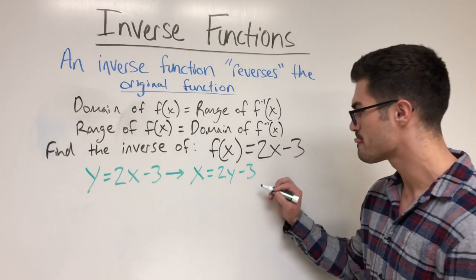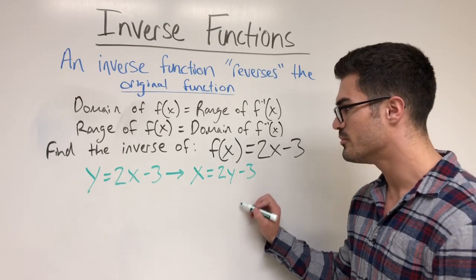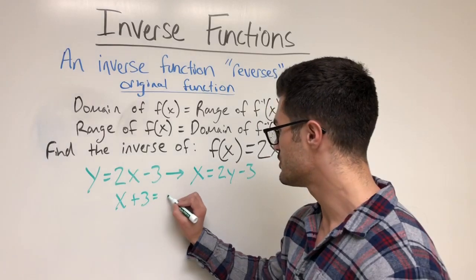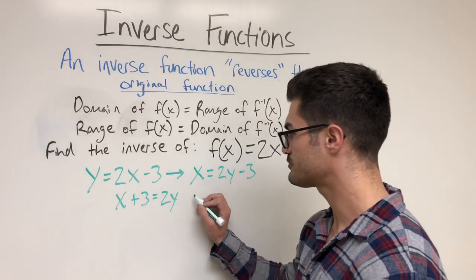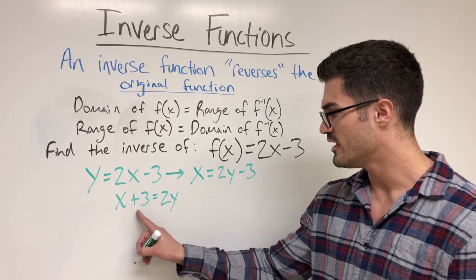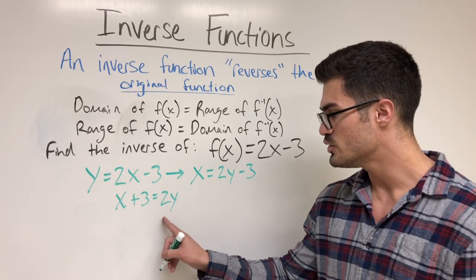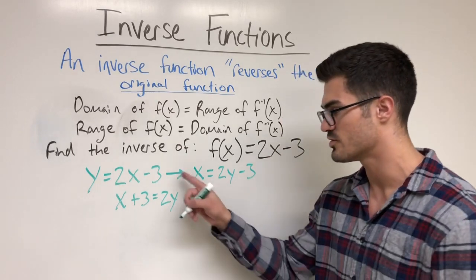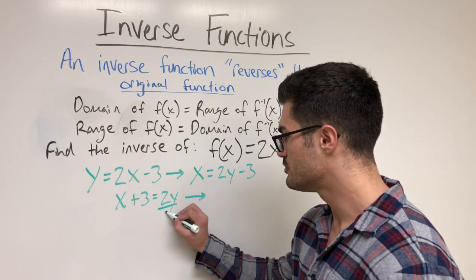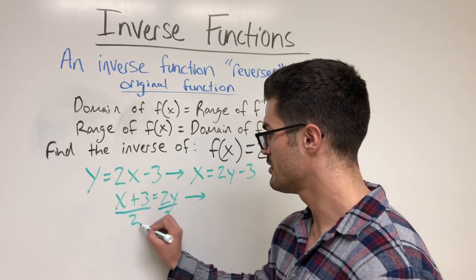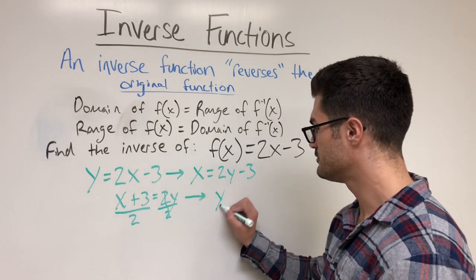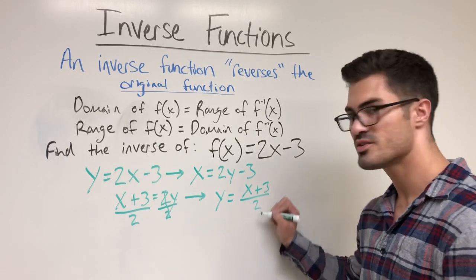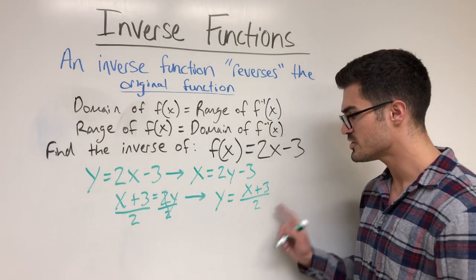I add 3 to both sides to get x plus 3 equals 2y. Then I divide both sides by 2, and the 2s cancel, giving me y equals (x plus 3) over 2. My last step is to rewrite y using the inverse notation, so I replace y with f inverse of x. The domain and range of this linear inverse function are both all real numbers.